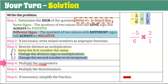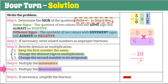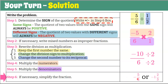Step four: multiply the numerators — negative five times two is negative ten. Step five: multiply the denominators — six times one is six. Step six: simplify if necessary. Both numerator and denominator are even, so they're divisible by two. Negative ten divided by two is negative five, and six divided by two is three. So the answer is negative five-thirds, or as a mixed number: negative one and two-thirds.